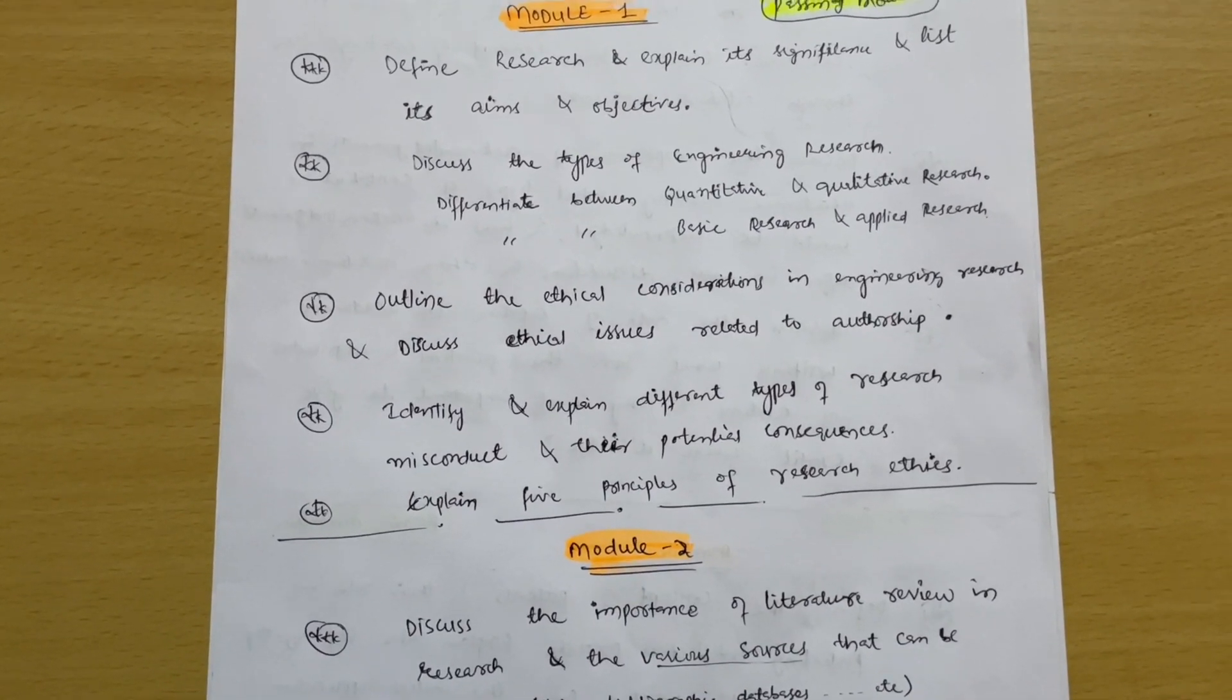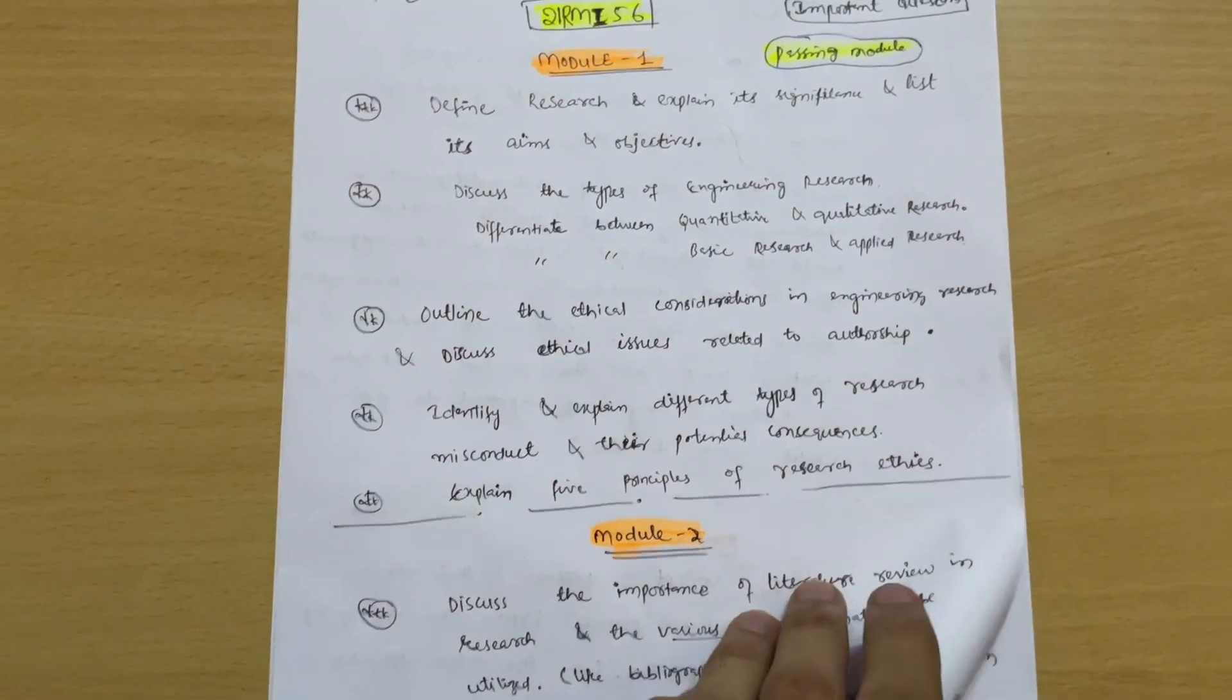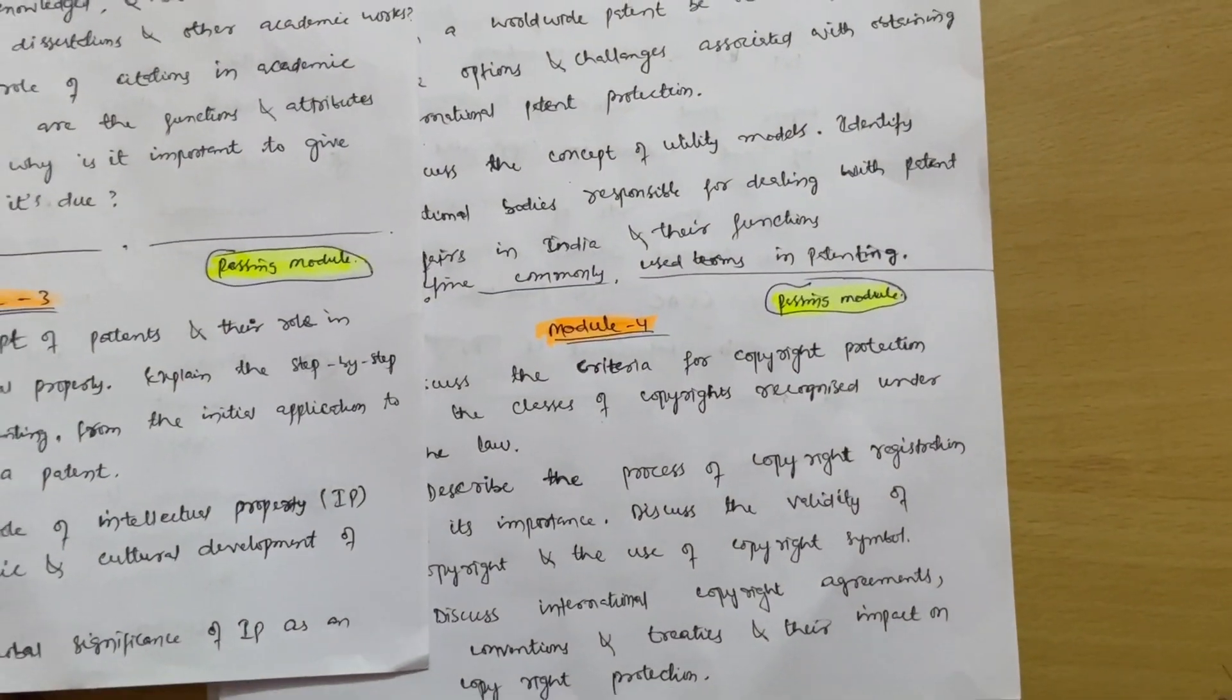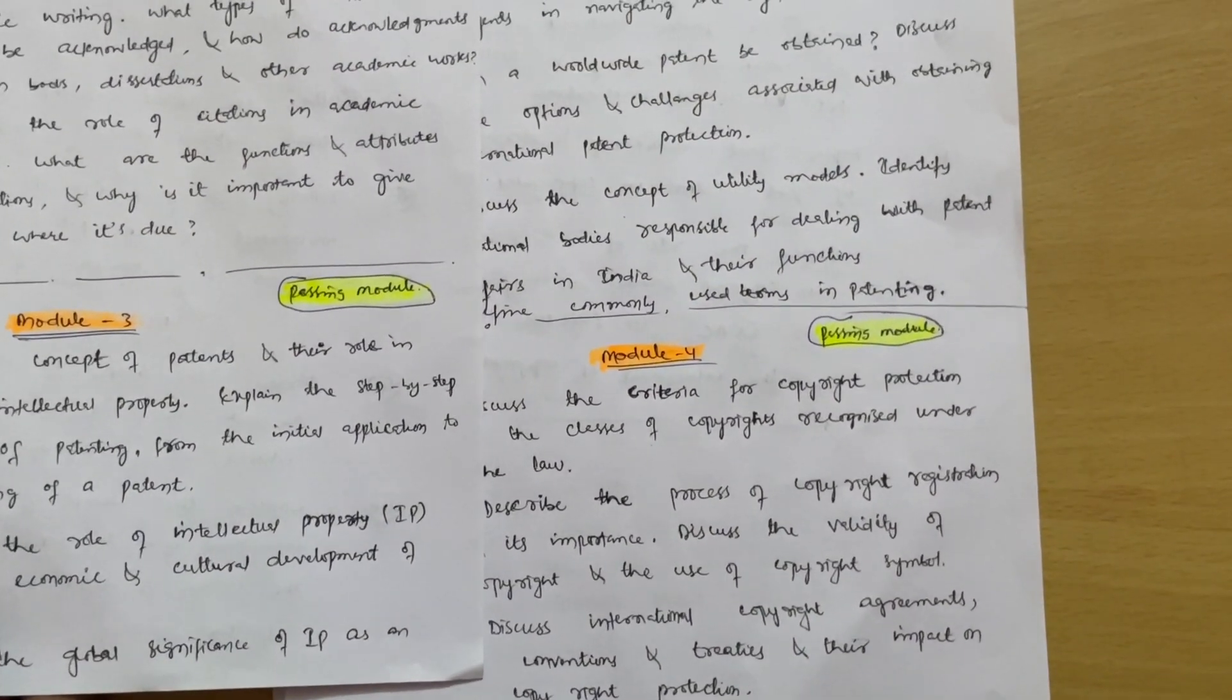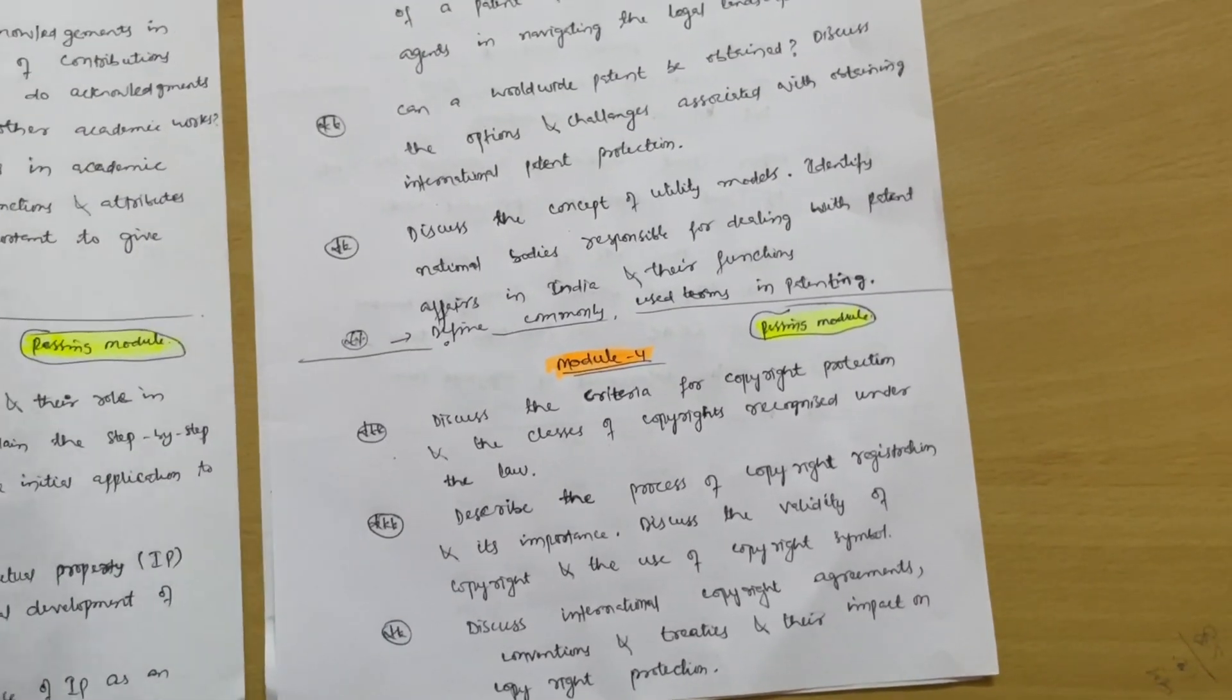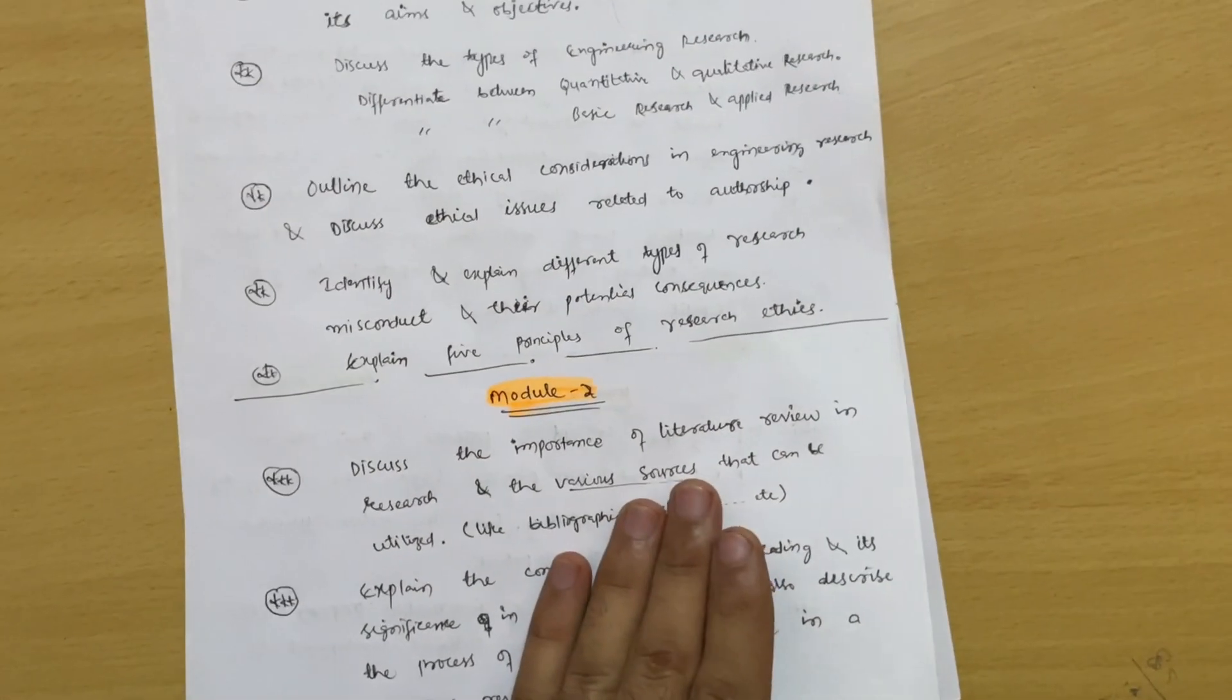So the first module is passing, your module 3 is passing, and module 4 is passing. These should be at your utmost priority and try to cover these three modules first, then go for the rest of the modules, whatever I have written over here.